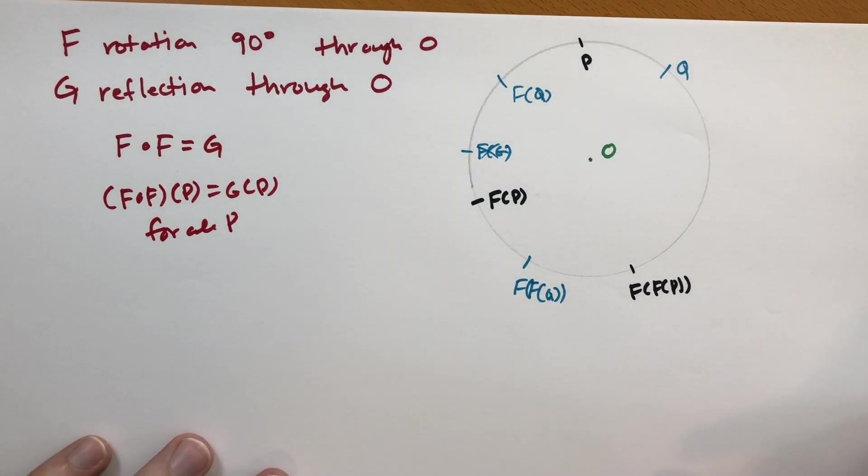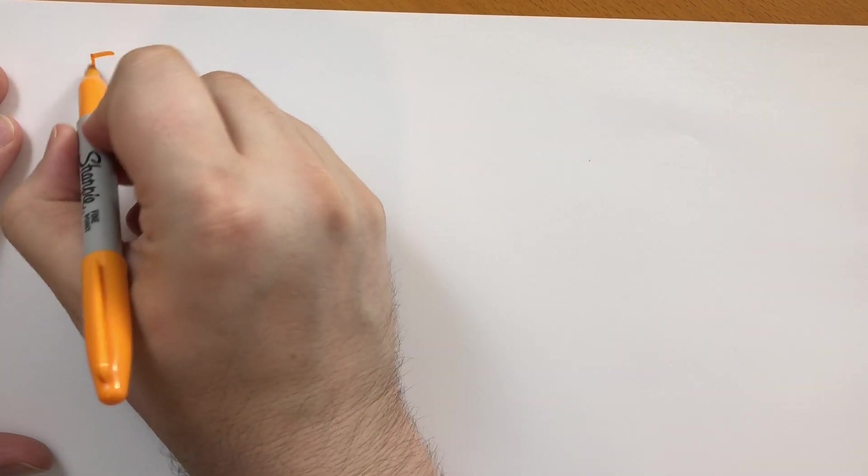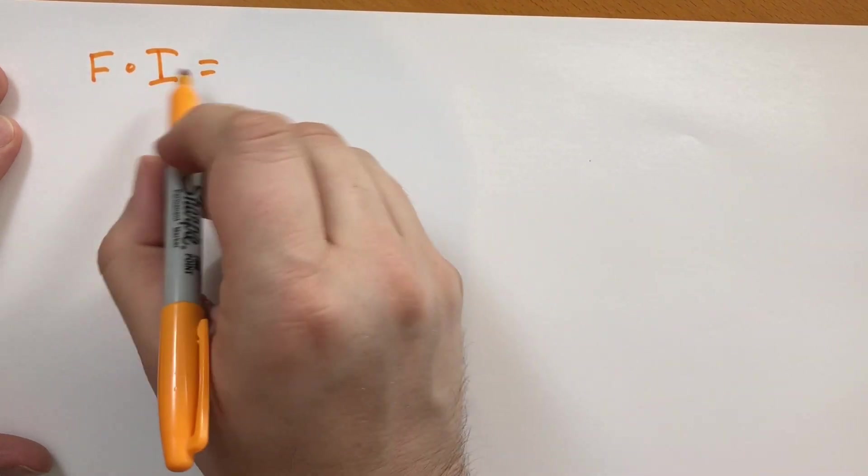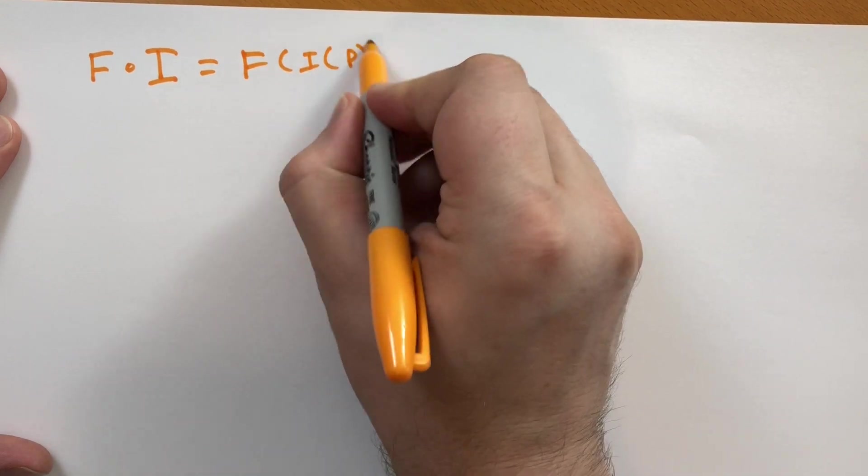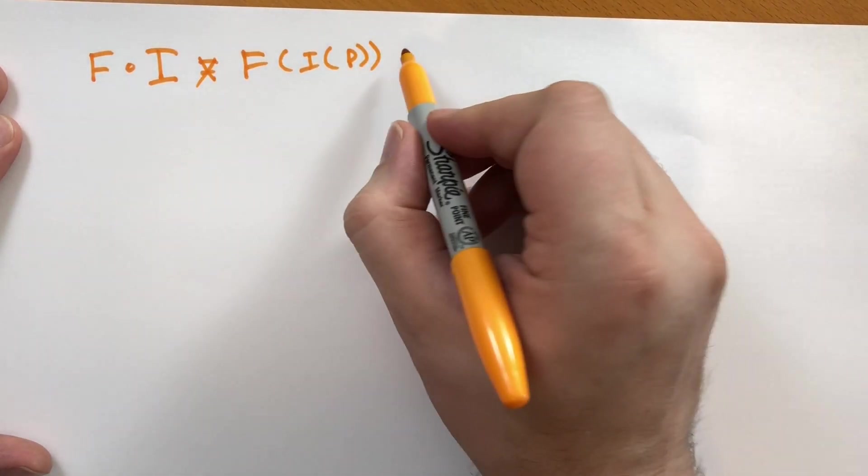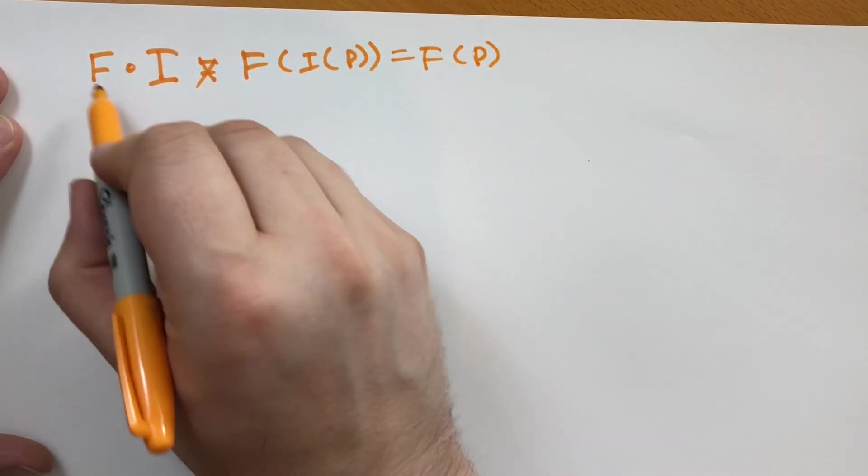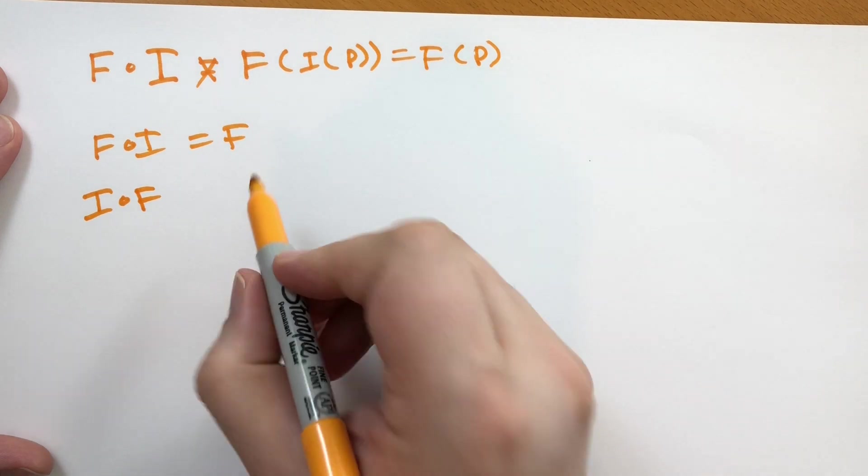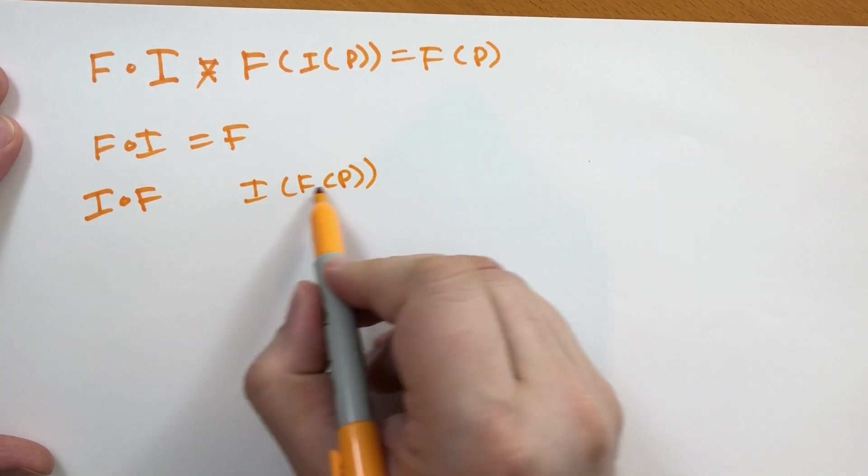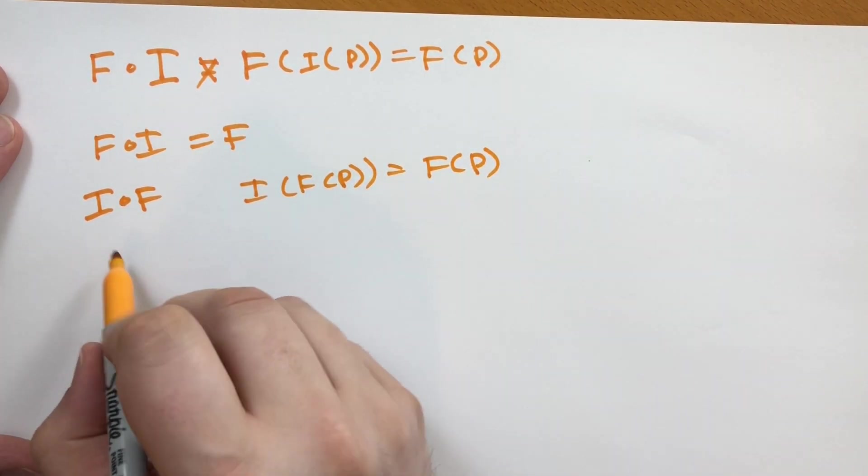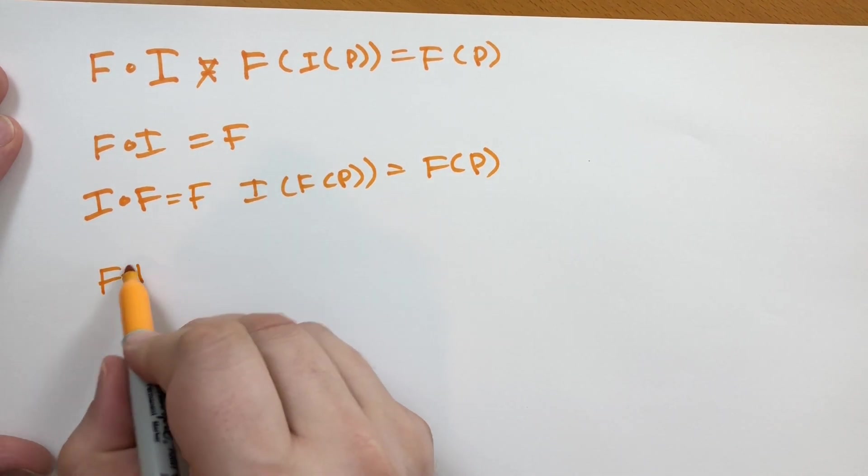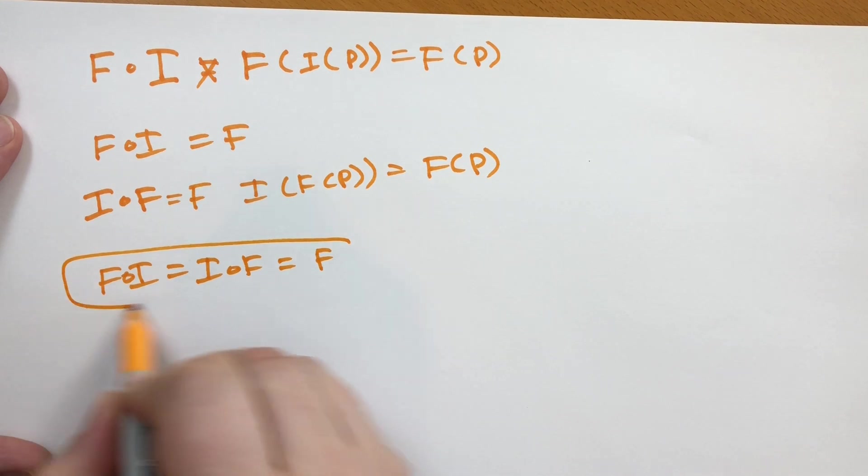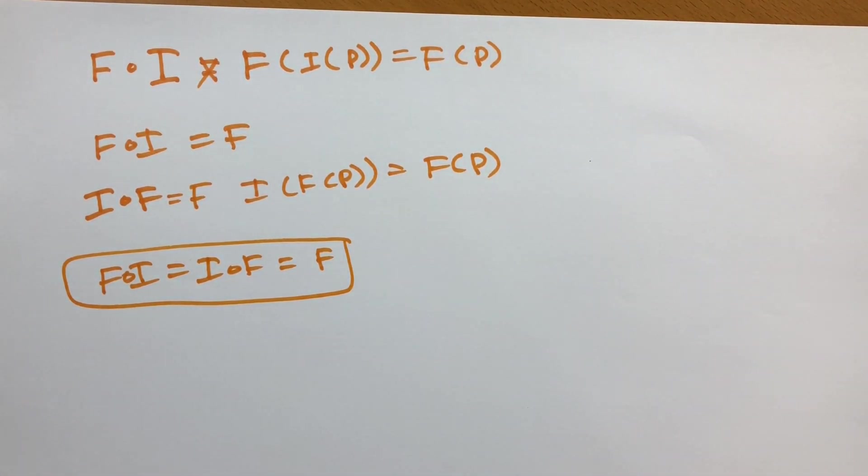Let's see what happens when we take an isometry and compose it with the identity. So let's take F, some isometry, and compose it with the identity. The identity doesn't change the points. If we applied it to any point, then that's the same as F of P, which basically says that this mapping of I is the same as F for every point P. If we did it the other way around, we would have I applied to F of some point P, and no matter what we do to that point, it's going to be the same point. So we have F of I equals I of F equals F.